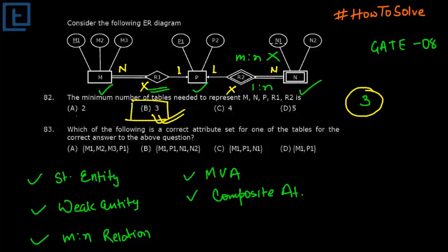Now let's go to the next question, which asks which is the possible attribute of one of the tables. At first look, we can say that this is impossible because option B and C include the attribute from all the relations, that is M, P, and N. This is also impossible. This M1 and P1 could be the answer only if we would have taken this R1 as a separate table.